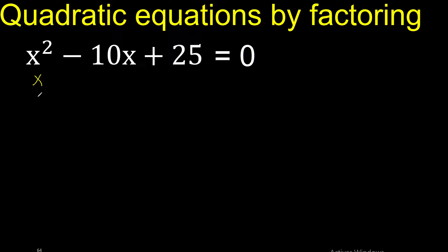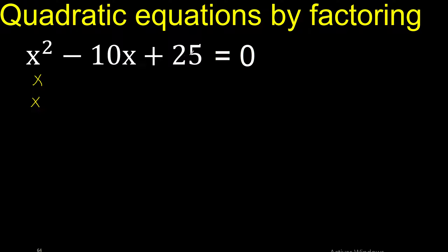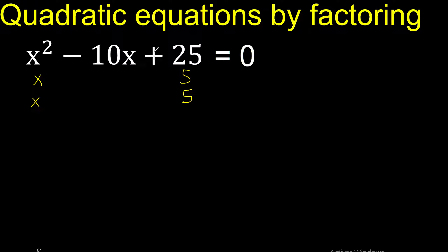x multiplied by x is x squared. Two numbers that multiply to 25: 25 multiplied by 1 is 25, or 5 multiplied by 5 is 25. Let's try plus.